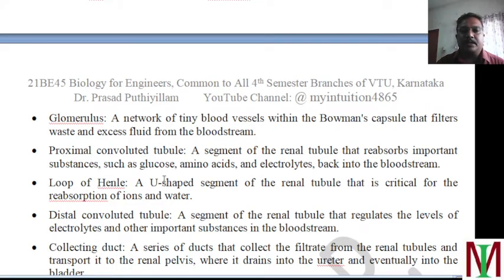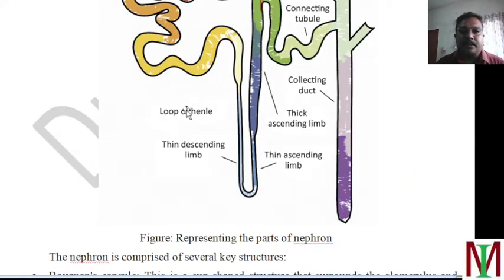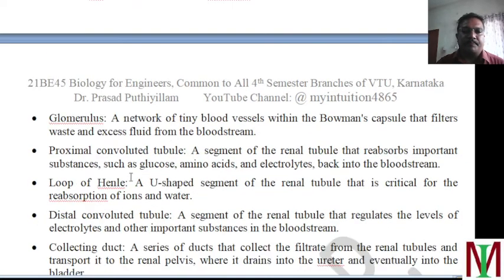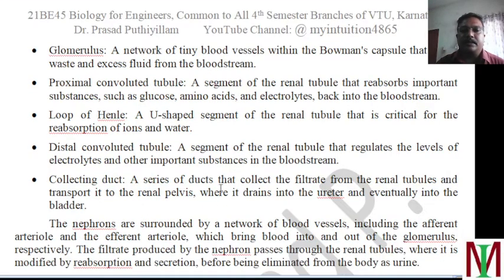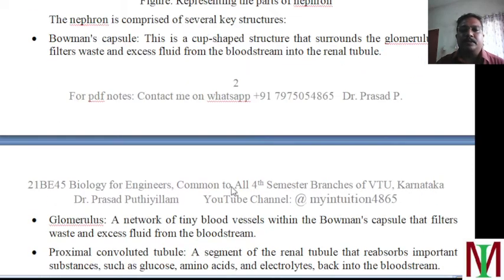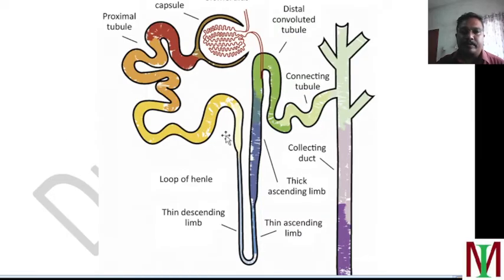Then the loop of Henle — it is a U-shaped segment of the renal tubule that is critical for the reabsorption of ions and water. This U-shaped tube absorbs ions like sodium and potassium which are needed for our body, and even water — any required amount of water is absorbed back into the blood stream. Then the distal convoluted tubule is a segment of the renal tubule that regulates the level of electrolytes and other important substances in the blood stream. Then the collecting duct collects the remaining waste and puts it into the urinary bladder. That is the single nephron structure — and like that, millions of nephrons are there in our kidney.